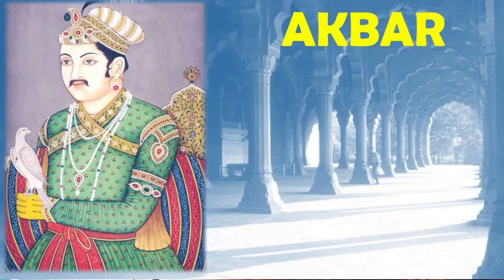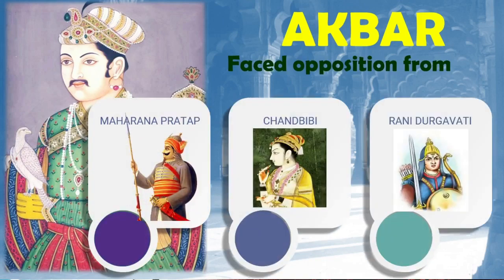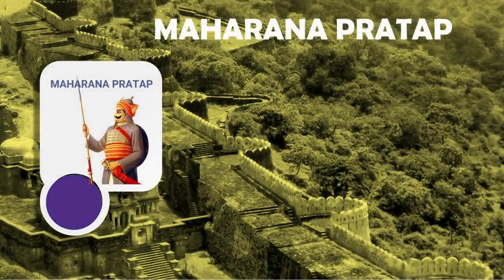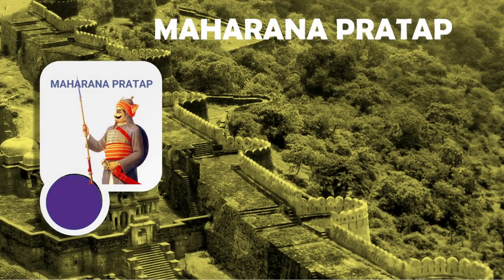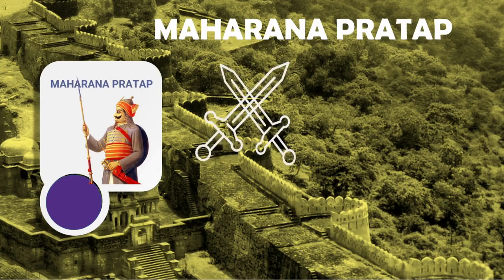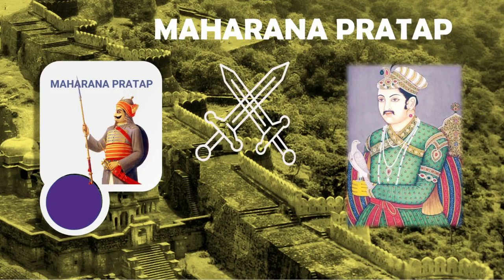Akbar was the most powerful king of the Mughal dynasty. When he tried to bring India under his central authority, he had to face opposition. Maharana Pratap, Chand Bibi, and Rani Durgavati struggled against him. Their strength is noteworthy. Now we will see about the struggle of Maharana Pratap. After the death of Udai Singh, Maharana Pratap ascended the throne of Mewar. He continued the struggle for Mewar's existence till the very end, struggling with Akbar to maintain his independence. He has become immortal in history due to his qualities of valor, bravery, courage, self-respect, and sacrifice.